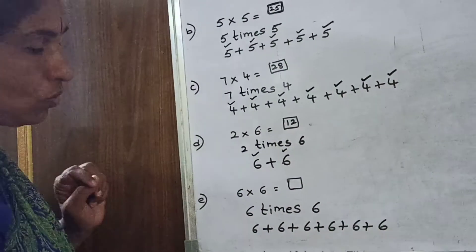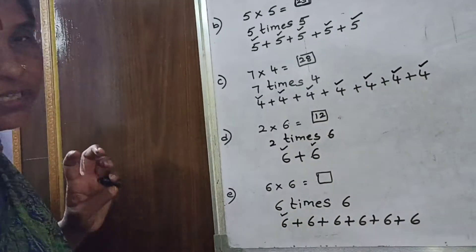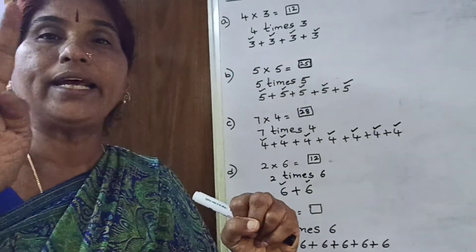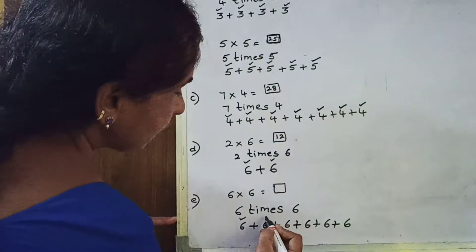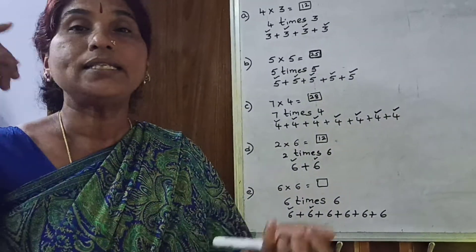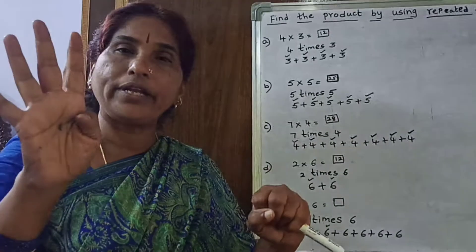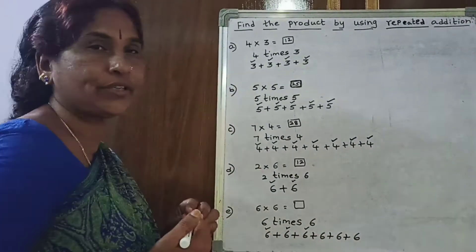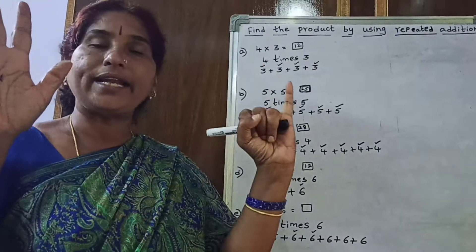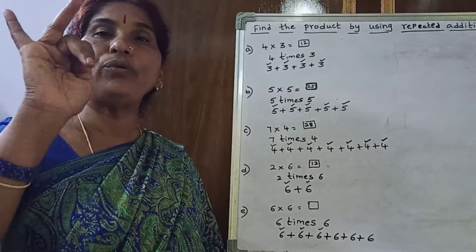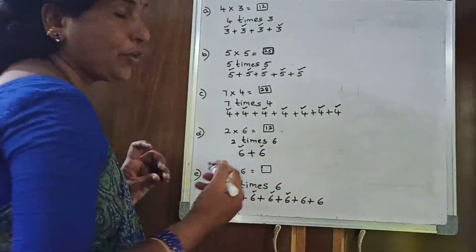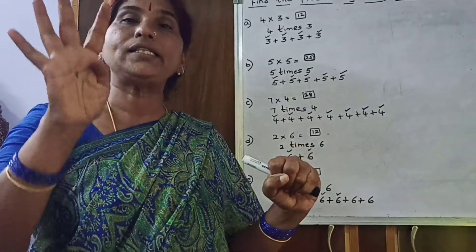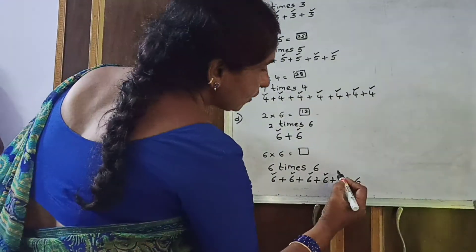So 6 times 6 — now start counting. First number is 6, finished. And the next one: 6 in mind, 6 in hand, 6 after: 7, 8, 9, 10, 11, 12. This 6 also finished. Now 12 in mind, 6 in hand, 12 after: 13, 14, 15, 16, 17, 18. This 6 also finished — 18. Again, 18 in mind, 6 in hand, 18 after: 19, 20, 21, 22, 23, 24. This 6 also completed — 24. Again, 24 in mind, 6 in hand, 24 after: 25, 26, 27, 28, 29, 30. This 6 also finished.